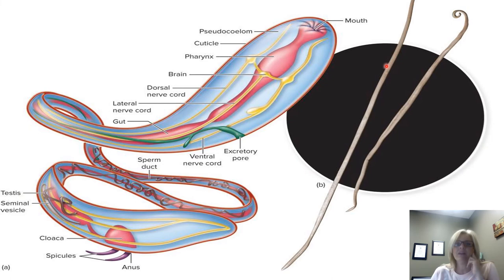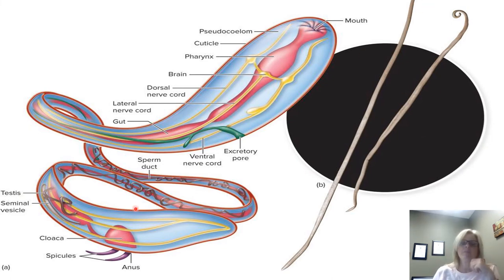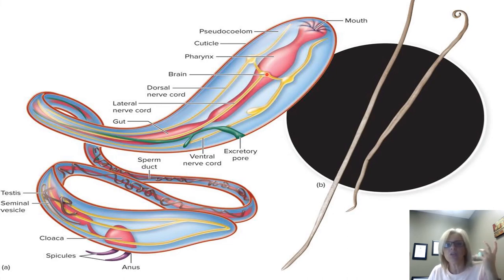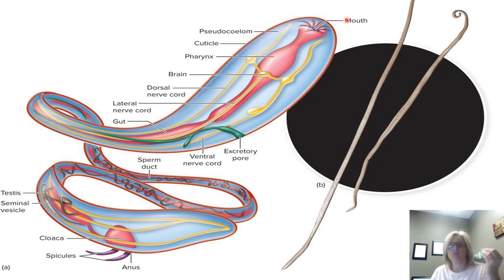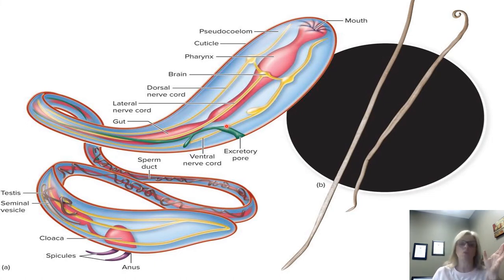This is Ascaris, which is a nematode roundworm — you've got a male and female here. Helminths are multicellular and have organs and organ systems. Most pathogenic helminths have a very highly developed reproductive tract; all of the other systems are reduced. They're pretty much just bodies full of reproductive organs.